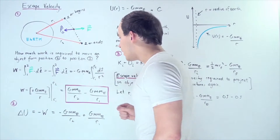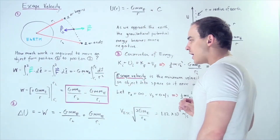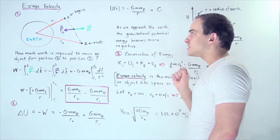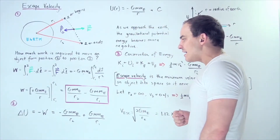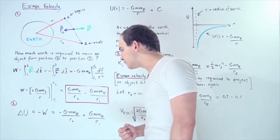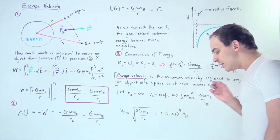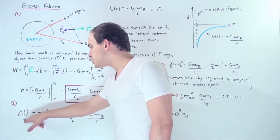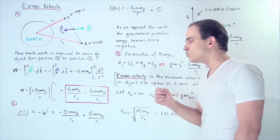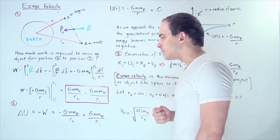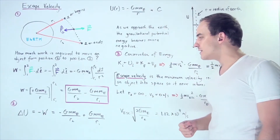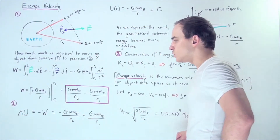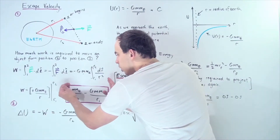Evaluating the integral gives us the work done by the spaceship against the force of gravity. By definition, the change in gravitational potential energy of the object equals the negative work done by the object against the force of gravity. So the change in gravitational potential energy equals the negative of that whole formula.